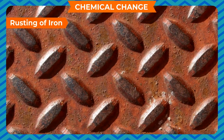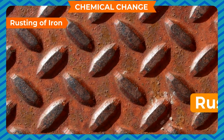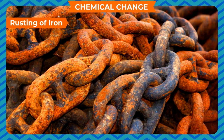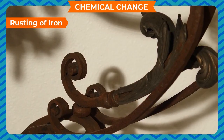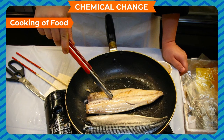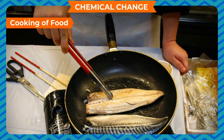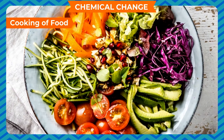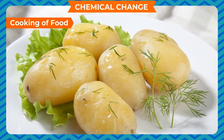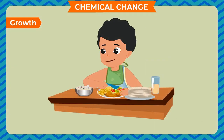Rusting of iron: when iron comes in contact with moist air, it changes into a brown-colored substance known as rust. The process is called rusting. Rusting forms oxides of iron which cannot be reversed into iron, so it is a permanent and irreversible change. Cooking of food: cooking bread, chapati, vegetables, pulses, and rice are all chemical changes in which new substances with altogether new properties are formed. Once you boil a potato, you cannot revert it back into a raw potato.